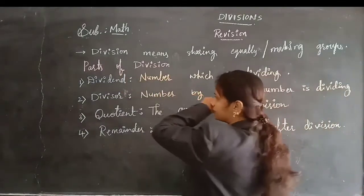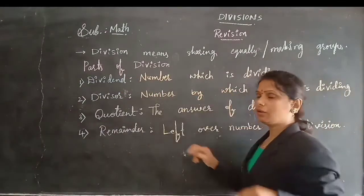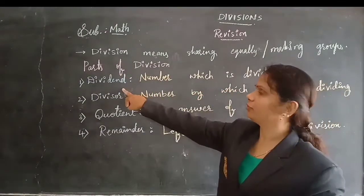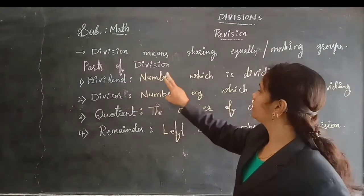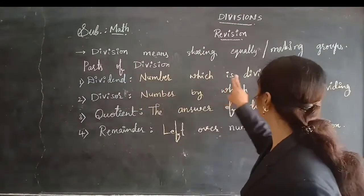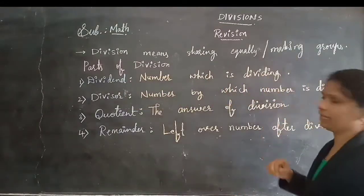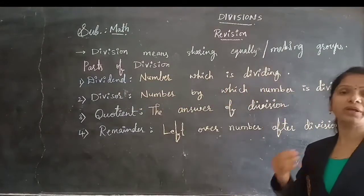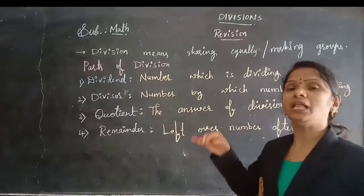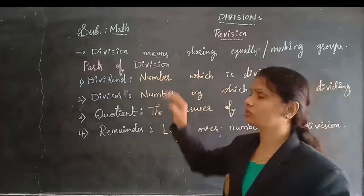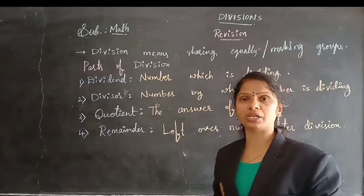In the parts of divisions, children: Dividend — the first one is dividend. Dividend means the number which is dividing. Which number we are selecting for dividing, that number is called dividend.